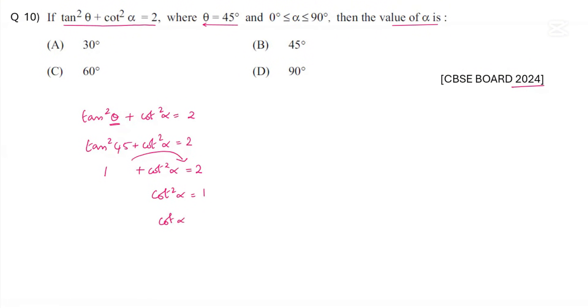So we have cot α = √1 which is 1. Now when we write the trigonometric values: tan 0° is 0, therefore cot is the reciprocal of tan, so that is undefined. Tan 30° is 1/√3, so cot 30° is its reciprocal, that is √3. And then we have tan 45° is 1, and therefore cot 45° is the reciprocal of 1, which is 1.